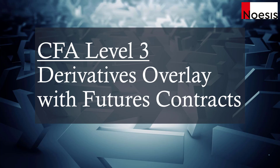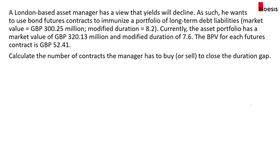In this video we'll be going through the derivatives overlay strategy using futures contracts. A London-based asset manager has a view that yields will decline, and he wants to use bond futures contracts to immunize a portfolio of long-term debt liabilities where the market value is £300.25 million with a modified duration of 8.2. Currently the asset portfolio has a market value of £320.13 million and the modified duration is 7.6.